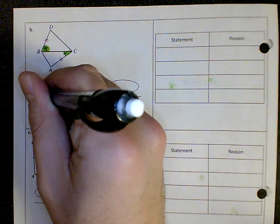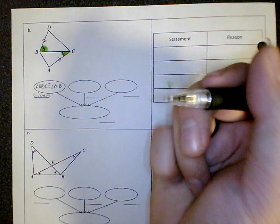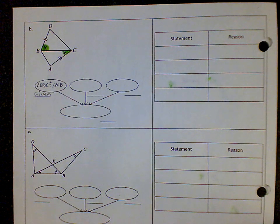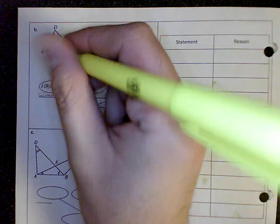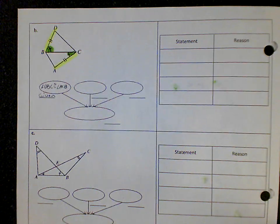So again if the information is written on the paper that means it's given. I'm going to start with my next piece of given information. There's two tick marks on each of these lines so those must also be congruent.